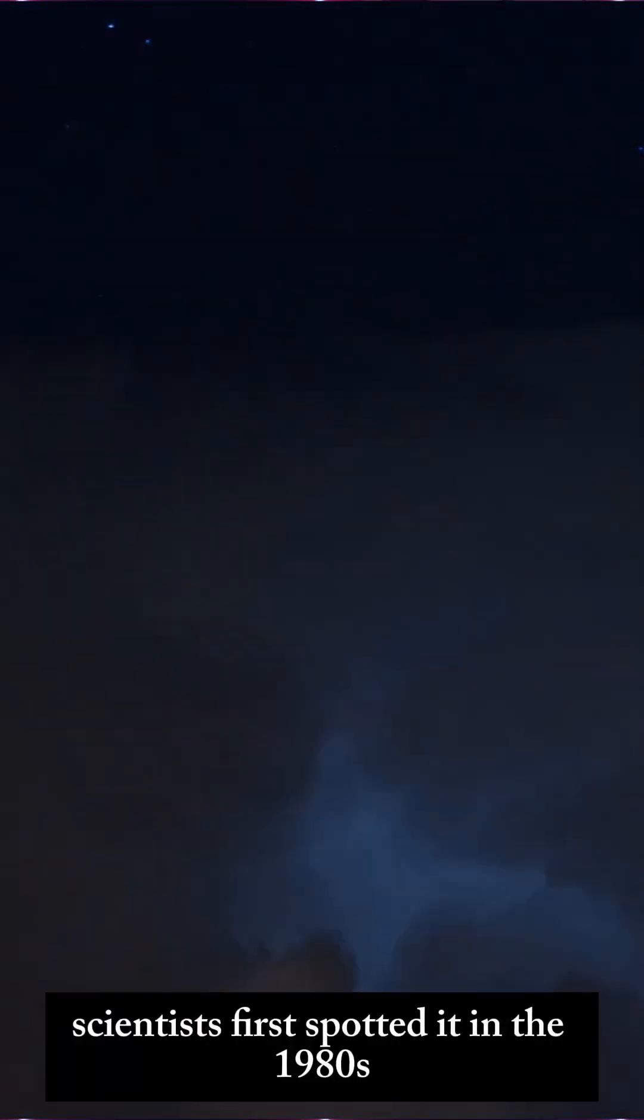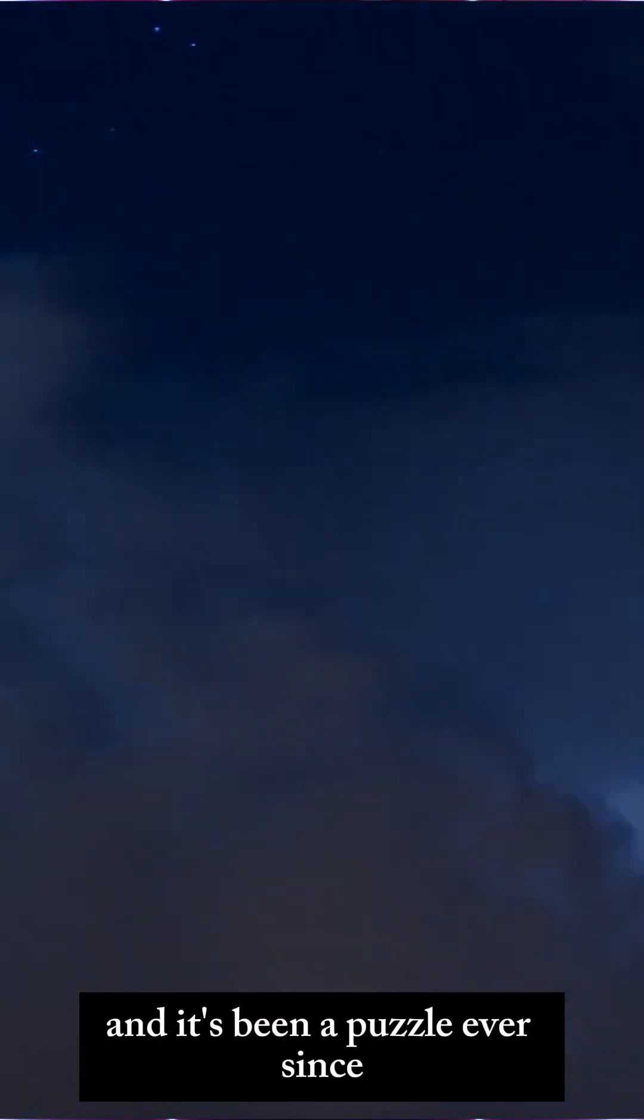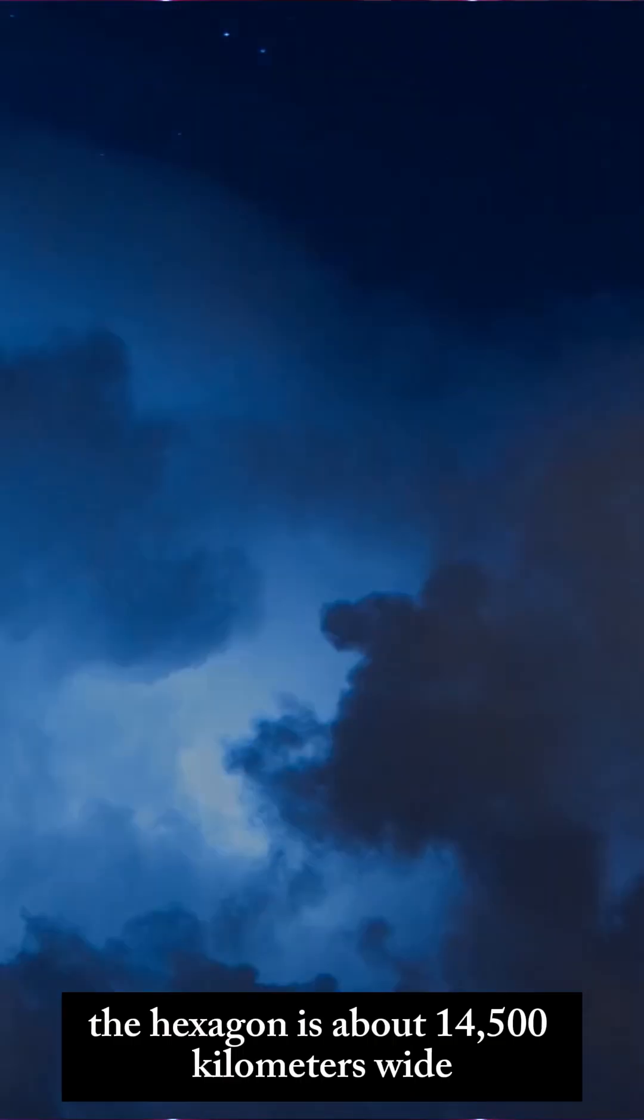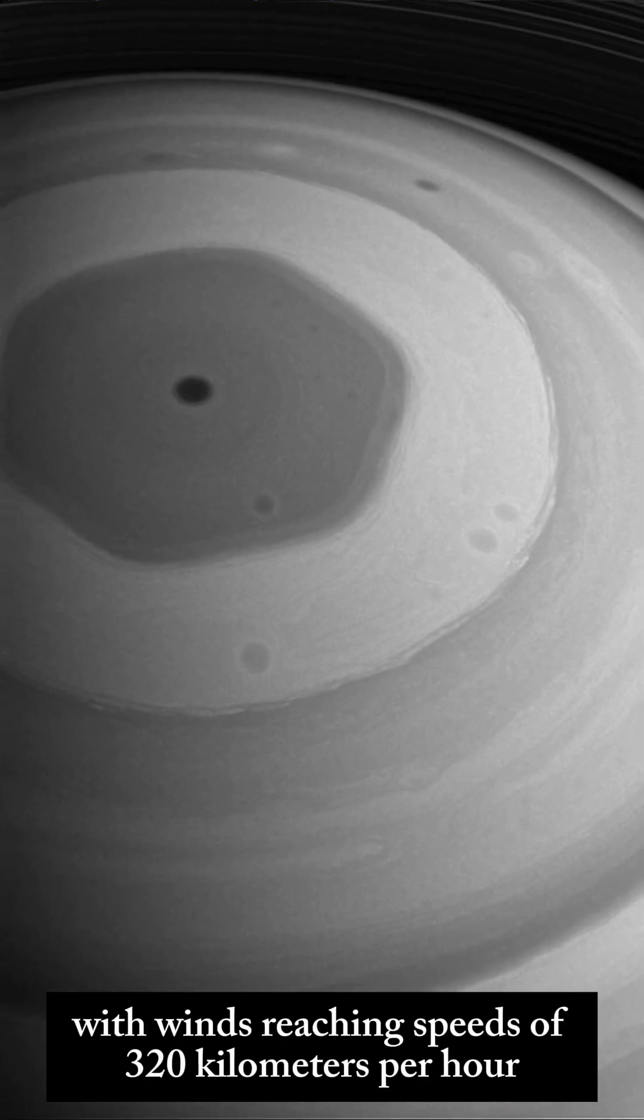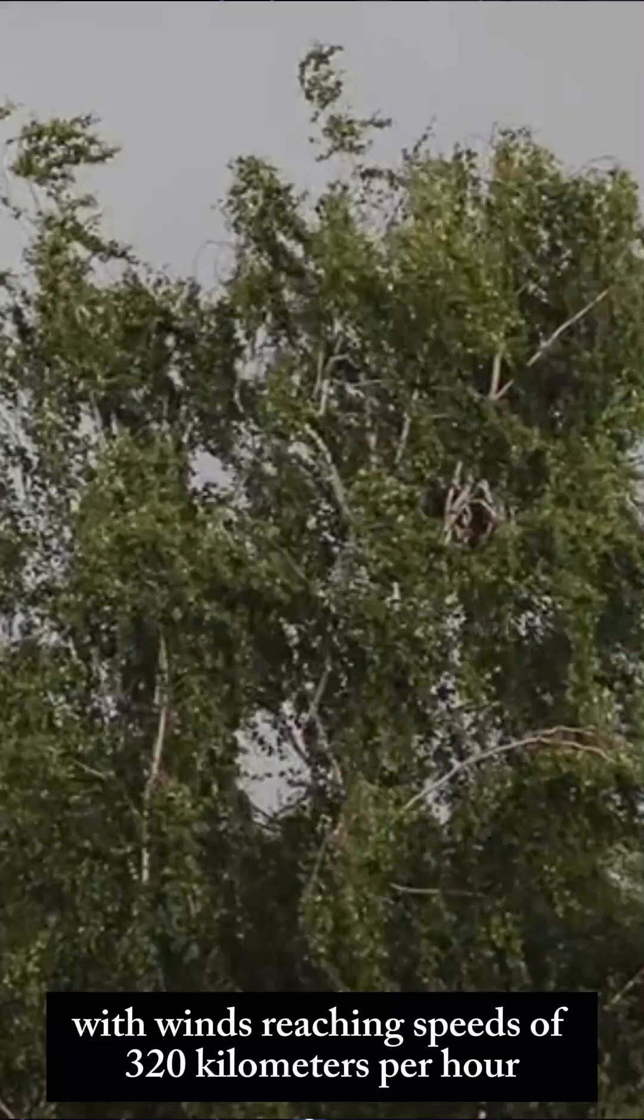Scientists first spotted it in the 1980s, and it's been a puzzle ever since. The hexagon is about 14,500 kilometers wide, with winds reaching speeds of 320 kilometers per hour.